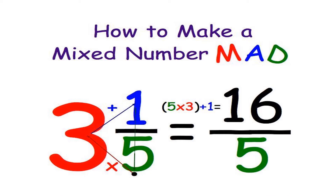Now we are changing mixed fraction to improper fraction. The relation is remembered as MAT — M for multiply, A for add, T for division. Take 3 and 1 upon 5: multiply 5 with 3 to get 15, then add the numerator 1, so 15 plus 1 is 16. Write 16 on the numerator and 5 on the denominator. So the improper fraction is 16 upon 5.